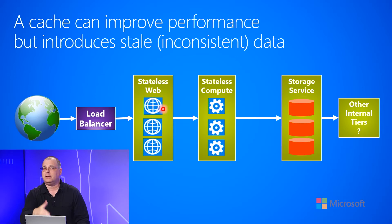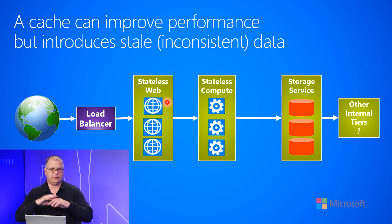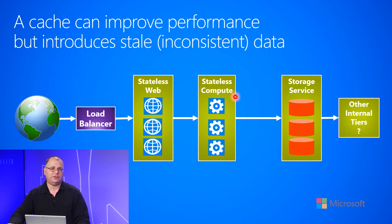It might do throttling decisions here — things that we've talked about elsewhere in this course. Assuming the request all looks good, the stateless web tier then forwards the request on to a stateless compute tier.